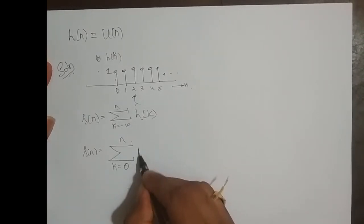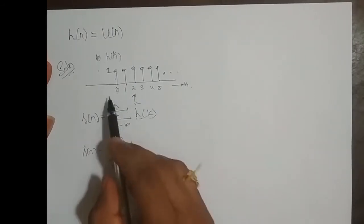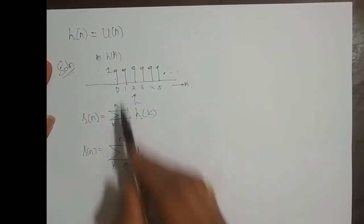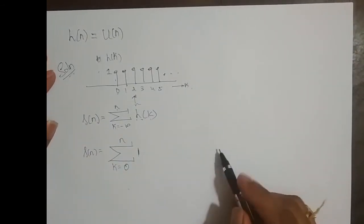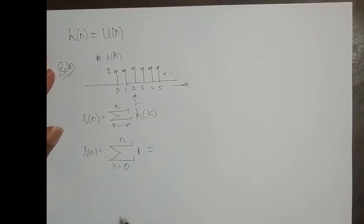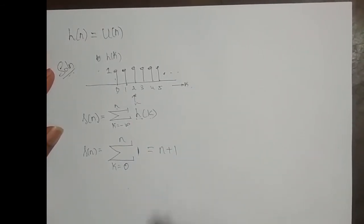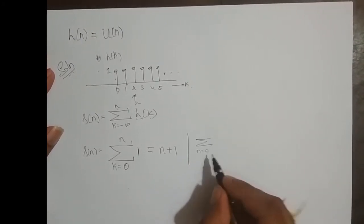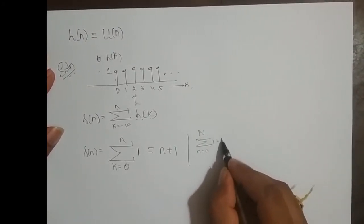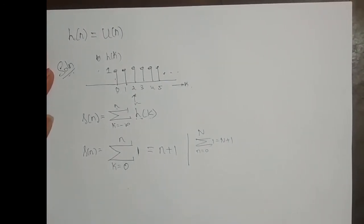H of k is 1 for k varying from 0 to wherever the n value I place it. And what is this? This is nothing but n plus 1, because of the standard form: summation n varying from 0 to n of 1 is nothing but n plus 1.